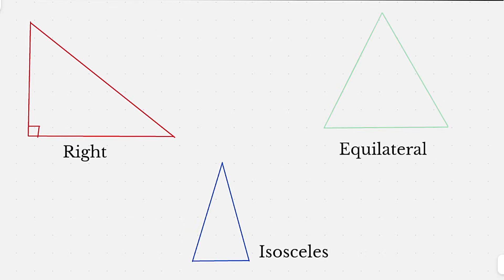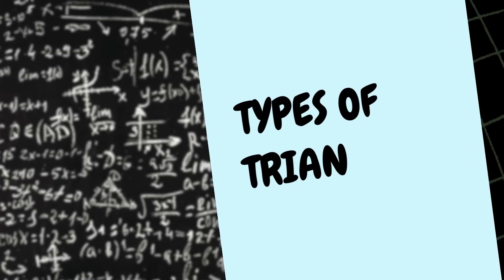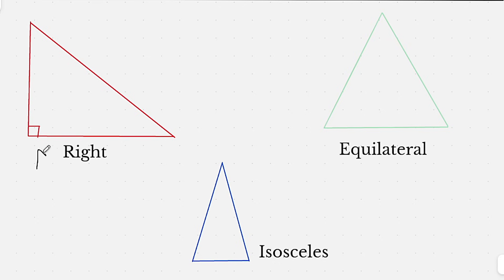Next up, we've got types of triangles, and while this is not on your cheat sheet, there are several subtypes of the right triangle that you will find on your cheat sheet. More on that later. So right triangles are pretty straightforward. You just need to know that you have a right angle, and these are going to lend themselves to the Pythagorean theorem and special right triangles, which we'll cover in a minute.